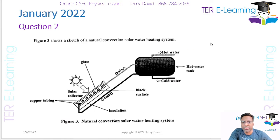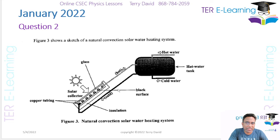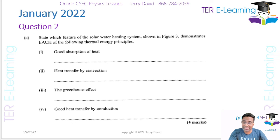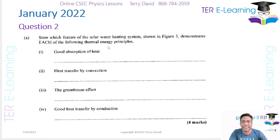In question two it shows a sketch of a natural convection solar water heater heating system. This is actually a repeat question — it came in a past paper already, so this question is wholesale from a past question. We are asked to state which feature of the solar water heater system demonstrates each of the following thermal energy principles.